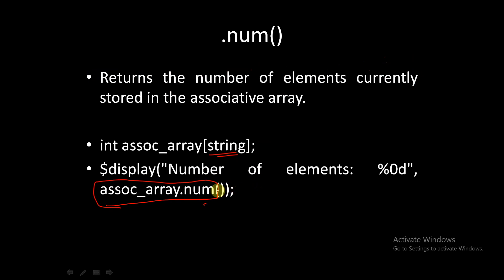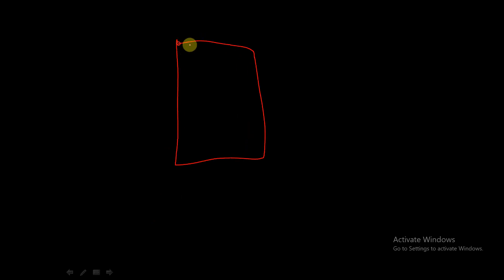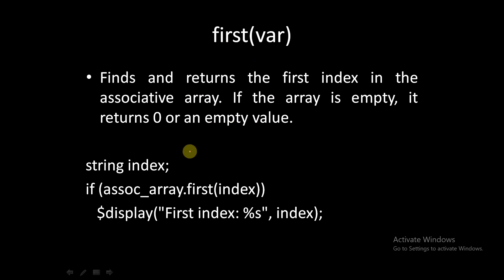The next built-in function is `.first`. It finds and returns the first index in the associative array. If the array is empty, it returns zero or an empty value. Since associative arrays have non-contiguous memory locations, if you want to know the first memory location created, you use `.first` and provide an index variable: `$display("First index is %s", index);` after calling `assoc_array.first(index)`.